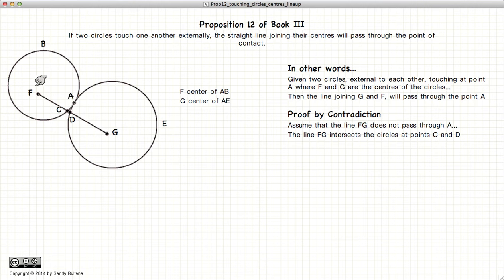So now, with a little bit of imagination, F is the center of circle B and G is the center of circle E. Now, AF is equal to FC because they're radii of the same circle, and GA is equal to GD, again because they're radii of the same circle.